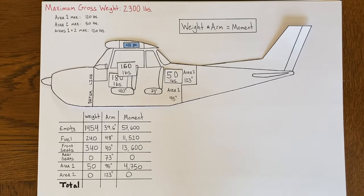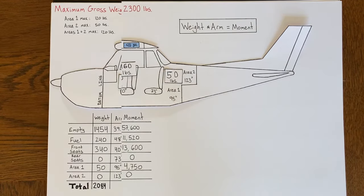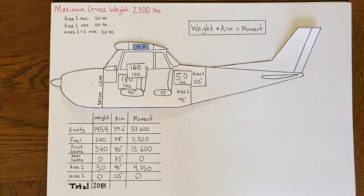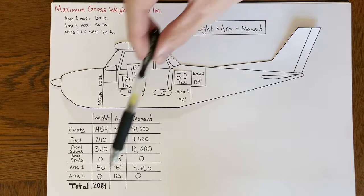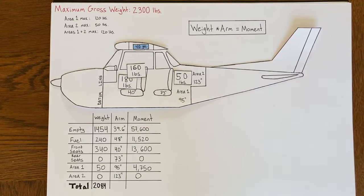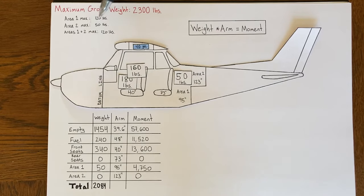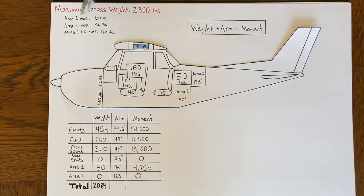Adding up all the weights — the empty weight plus fuel, passengers, and bags — gives a gross weight of 2,084 pounds. We are within the maximum weight limit of 2,300 pounds. For the baggage limits, we have 50 pounds in area one, which is less than the 120-pound limit, and nothing in area two. So we've met all the maximum weight limits.